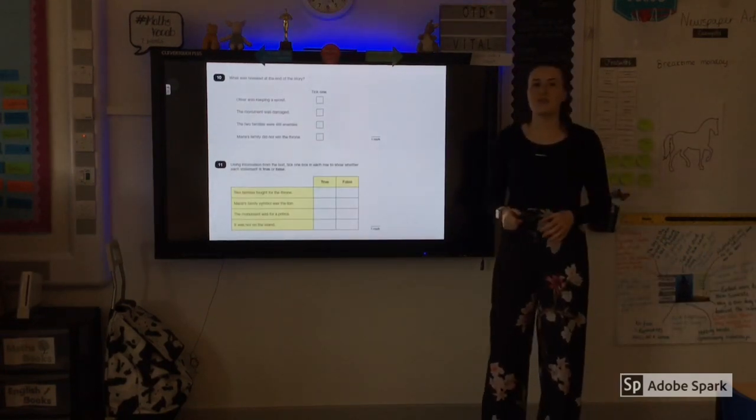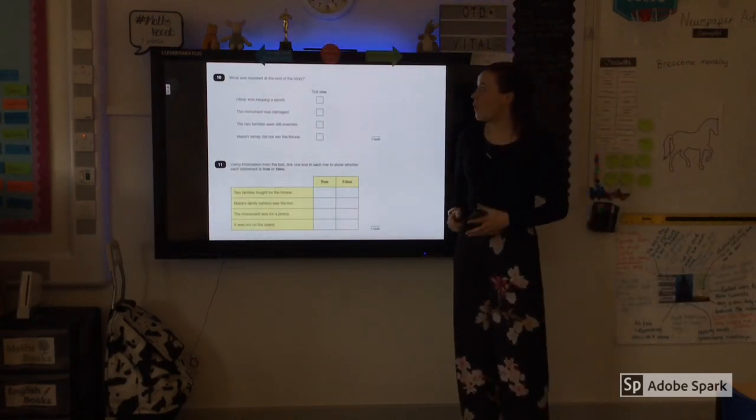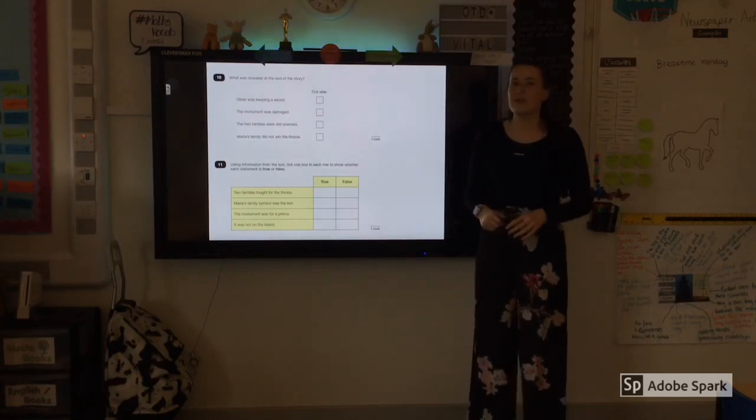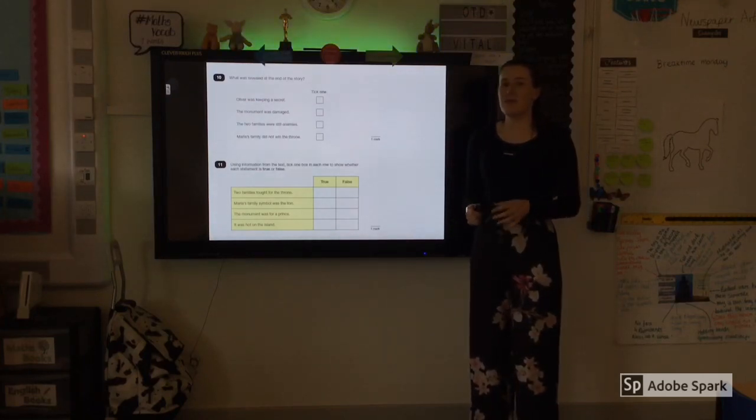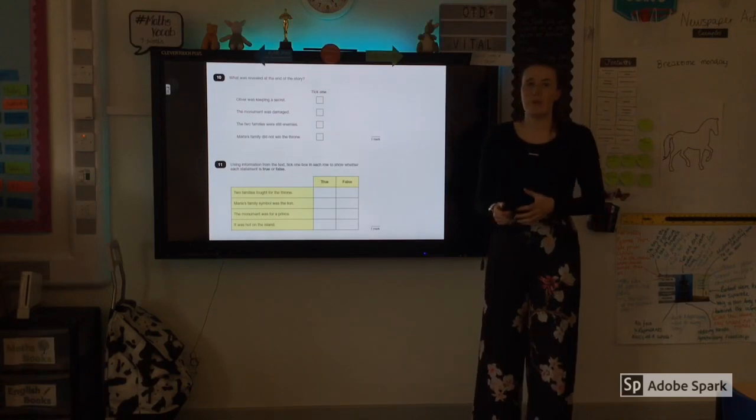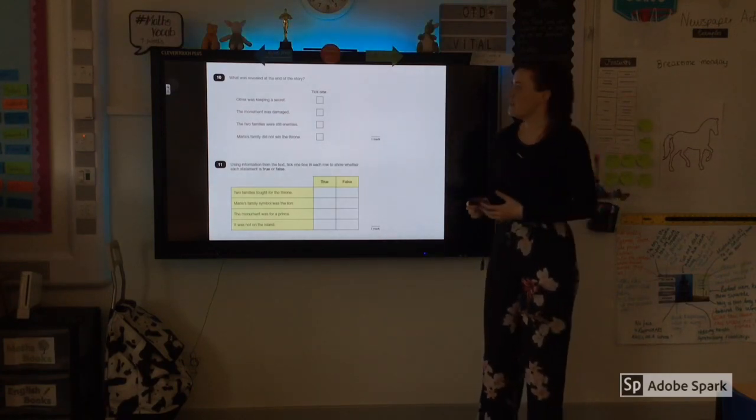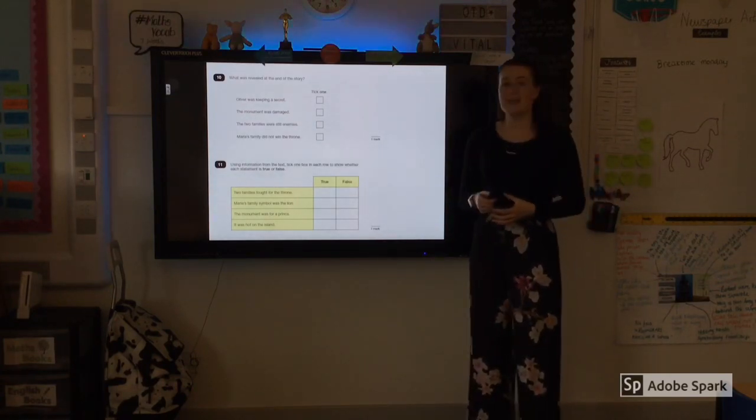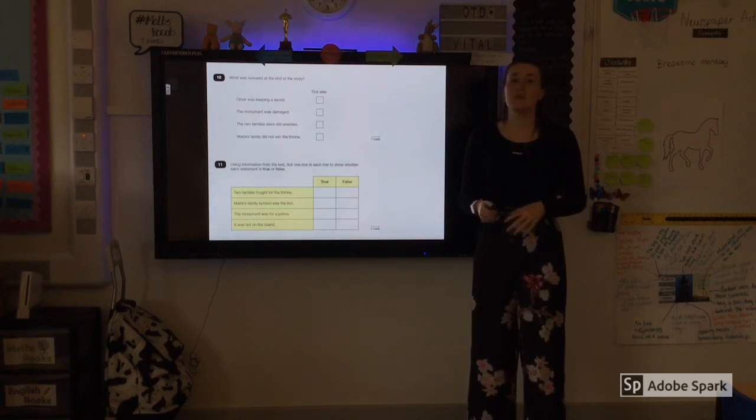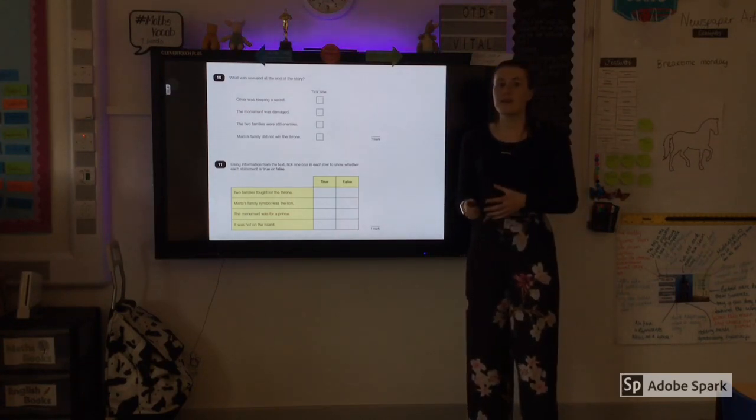So on to the last two questions then. Number ten. What was revealed at the end of the story? Now that's quite a nice question again because it gives you a bit of a hint about where in the text you need to go. So you need to go to the end of the story to find out what happened. Basically, you're looking for one sentence which summarises the events that happened at the very, very end.